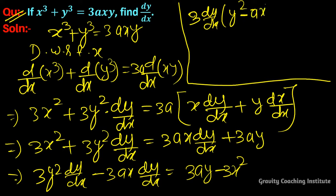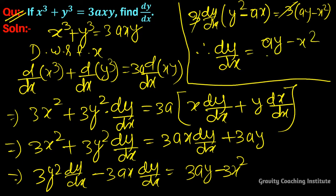Therefore, dy/dx equals (3ay - x²) over... The 3 cancels, so dy/dx = (ay - x²)/(y² - ax), which is our required answer.